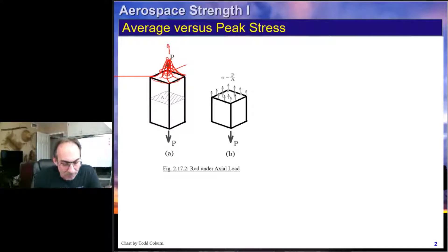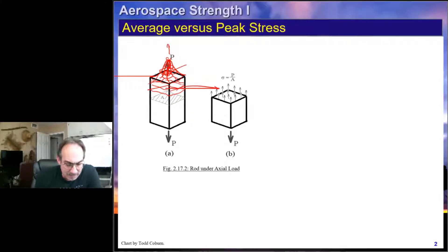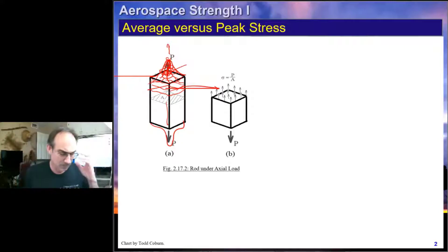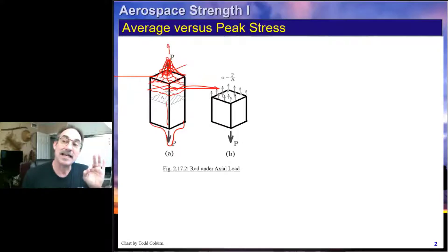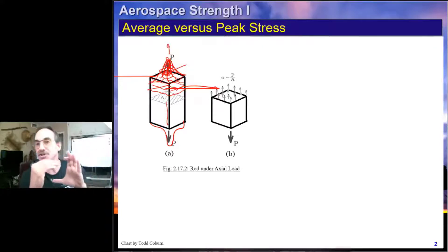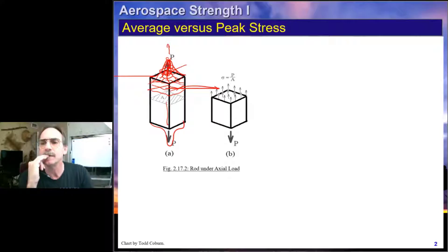So the stress right under the load application is nearly infinite, a little further out it's less, out here it's even less, and at the outer edge it's nearly zero — but the average stress is P over A. Moving down from the load, by the time we get further away, the load spreads out. Near the middle it's approximately average stress everywhere. St. Venant's principle deals with this idea of proximity to load. Most stresses we calculate assume St. Venant's principle holds — we're far enough away from the load that we can ignore those effects.